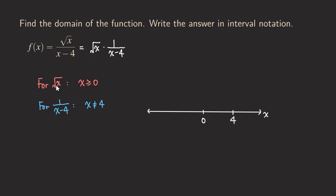For the first part of the function, the square root of x, x must be greater than or equal to zero. We can do the shading on the number line above the line so that we can see where they overlap. For this condition, x is greater than or equal to zero, so we have a solid dot at zero because of the equal sign, and then we shade all values to the right of zero.